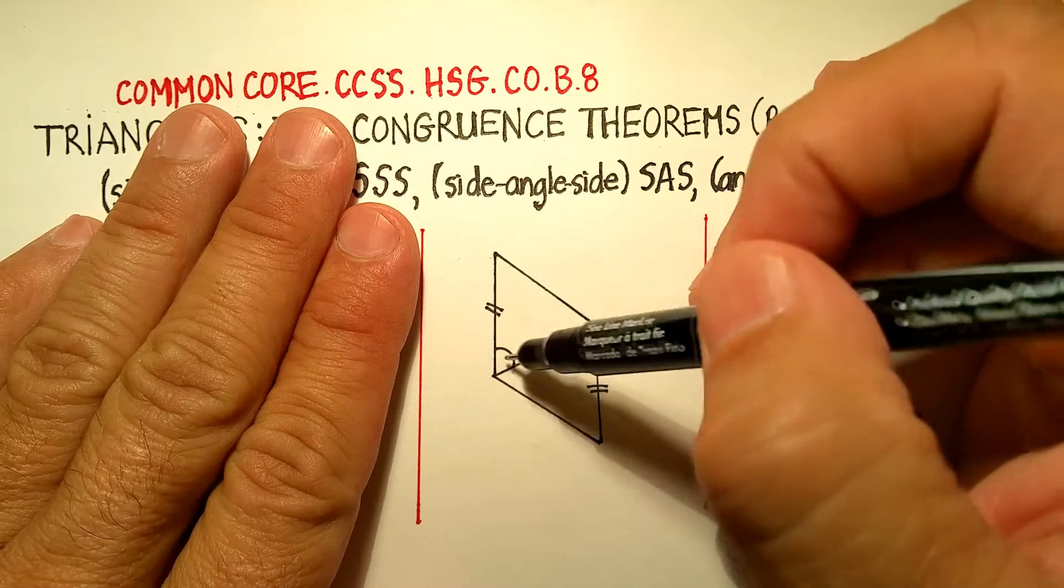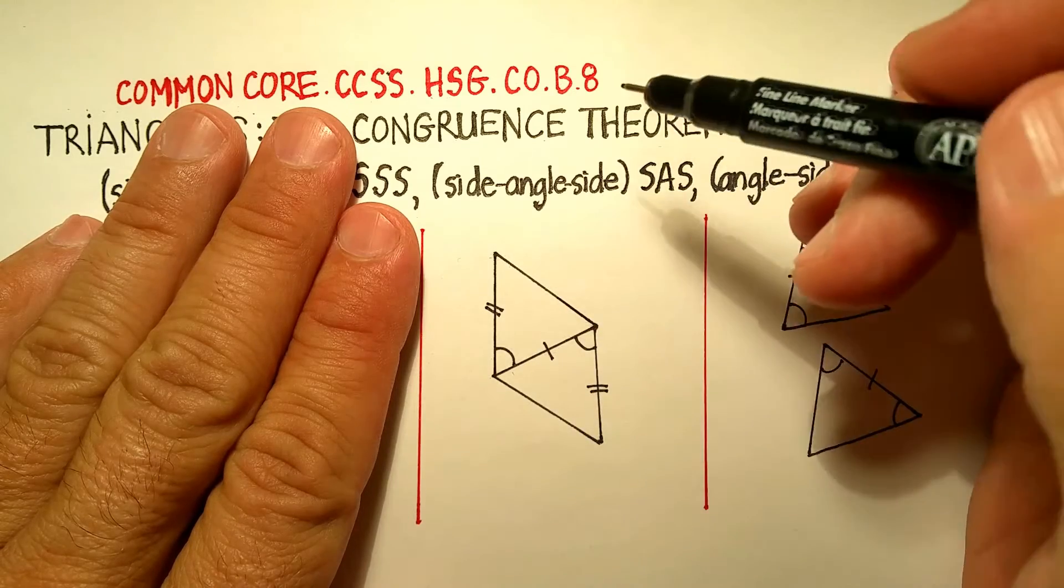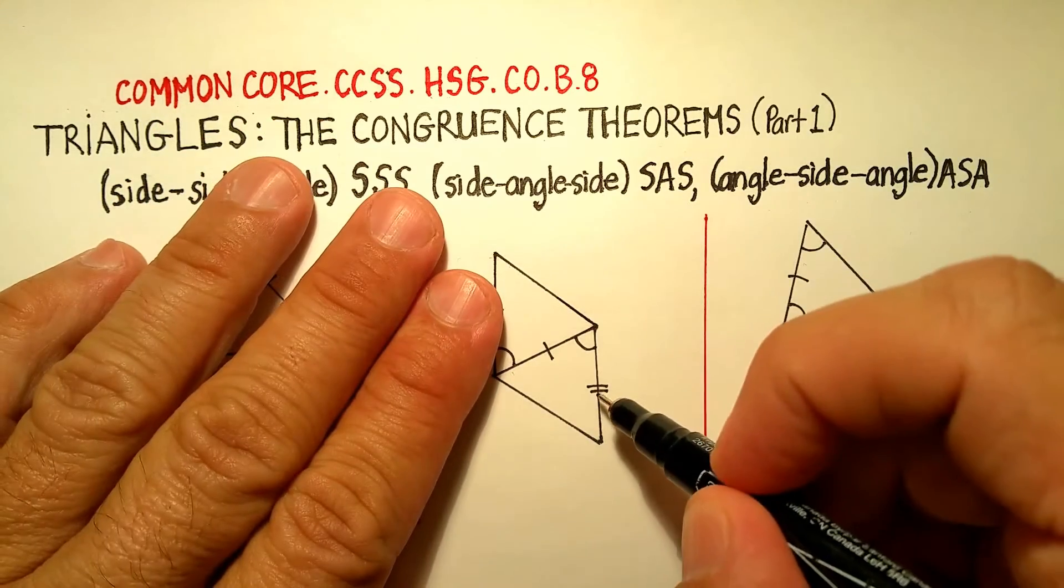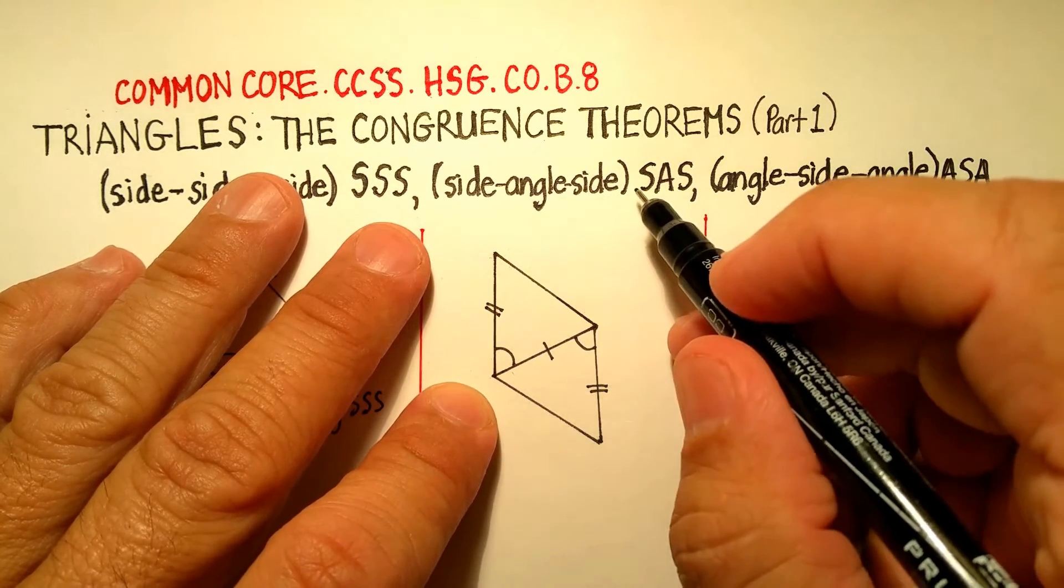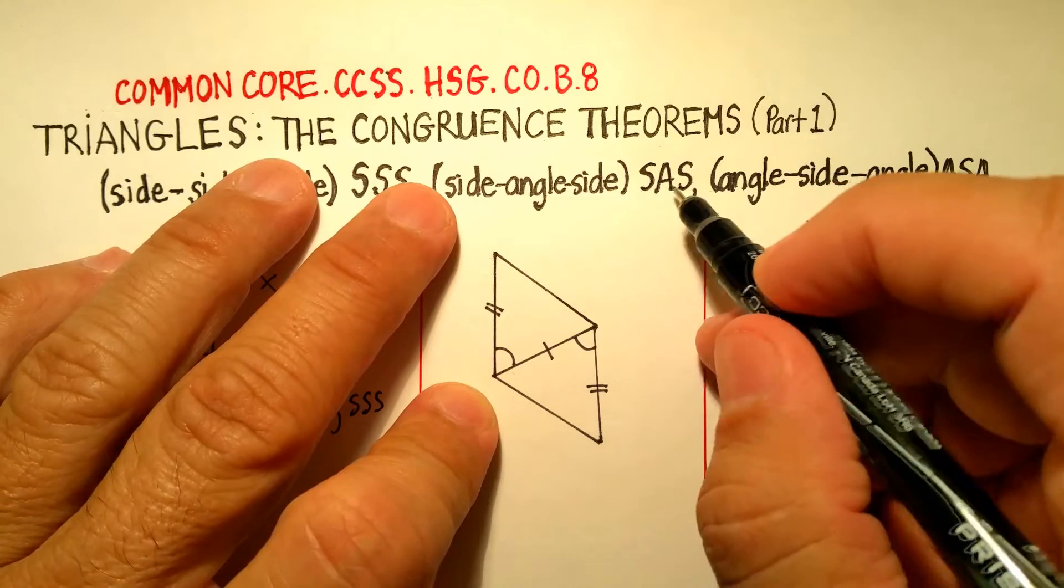So like this little corner part right here, side-angle-side, has to be congruent to the same side-angle-side of a second triangle, or SAS, side-angle-side.